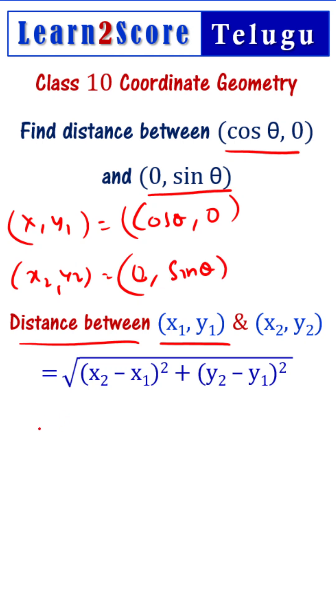Let us substitute these into the formula: square root of (x₂ minus x₁) whole square, that is (0 minus cos θ)² plus (y₂ minus y₁) whole square, that is (sin θ minus 0)².